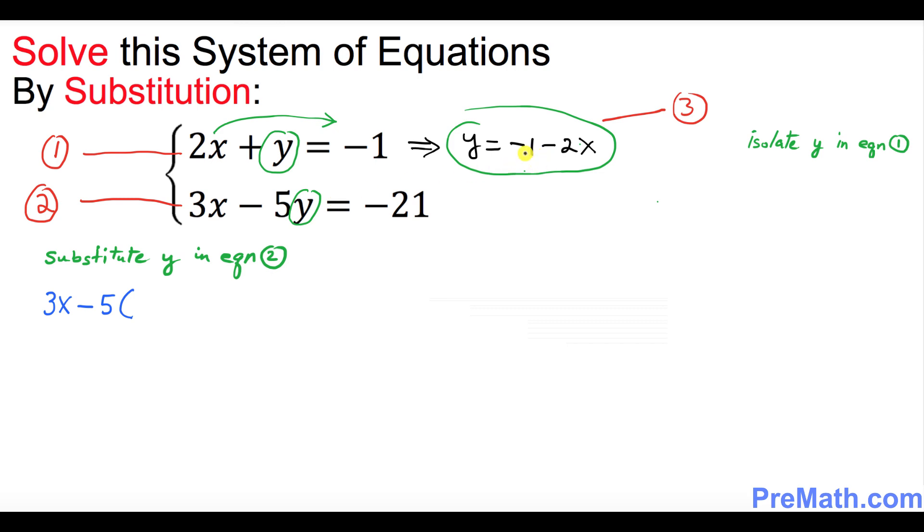The y value is we're going to replace this with negative 1 minus 2x in parenthesis, closed, equal to negative 21.